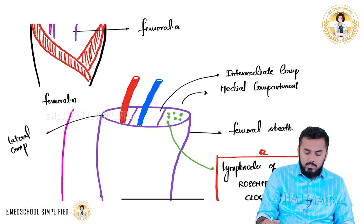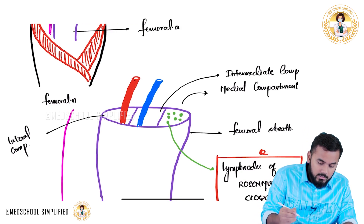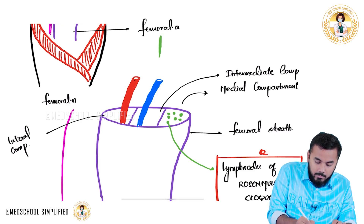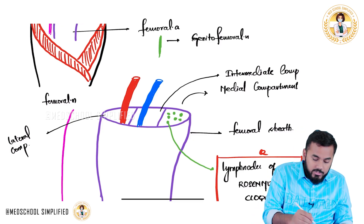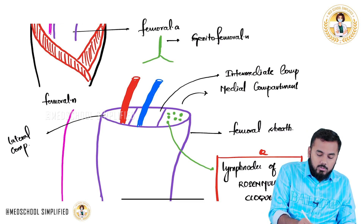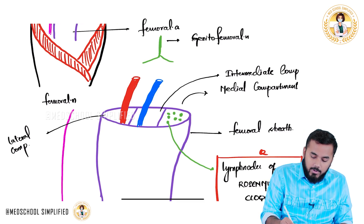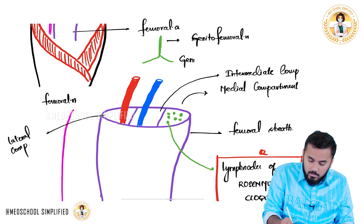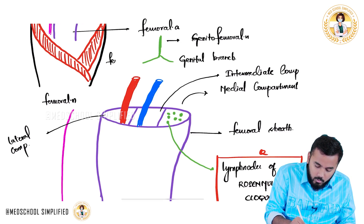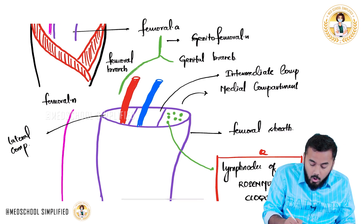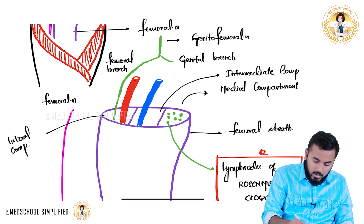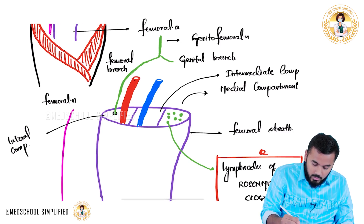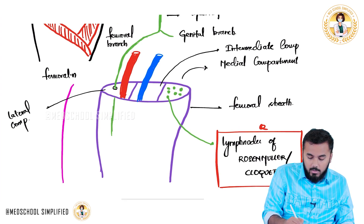There is one last structure to remember: the genitofemoral nerve. This nerve branches into two: the genital branch and the femoral branch. The femoral branch passes down along with the femoral artery, enters the lateral compartment of the femoral sheath, and passes through it.